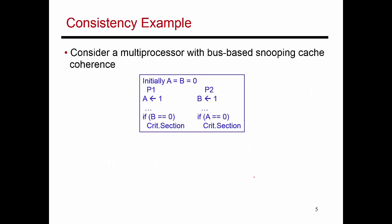Let's look at an example to understand what a consistency model is. Say you are a programmer writing code with a critical section — a region where only one thread should be modifying certain variables at a time. That's mutual exclusion: when one thread executes the critical section, no other thread should be executing it. We saw how you'd use a lock to implement this.